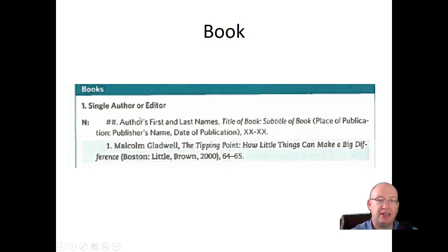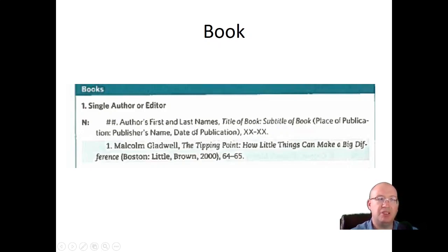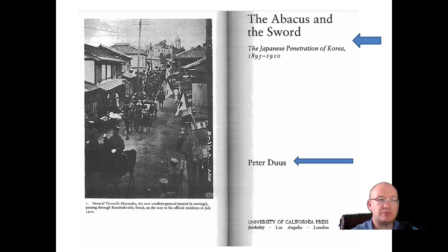This is a footnote, so it goes at the bottom of your paper — this is not the bibliography. The bibliography goes at the end. This footnote is so that it's clear to people where you got your information. Now I want to give you a concrete example of where you would find this information on a book.